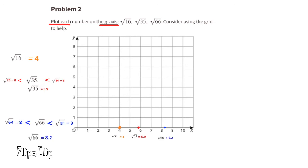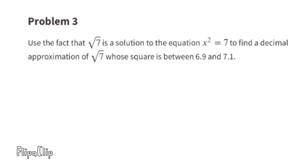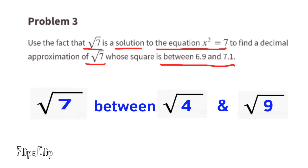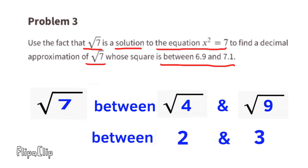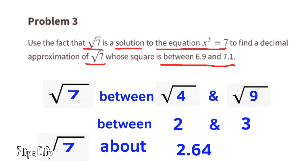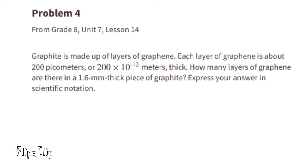Problem number 3: use the fact that the square root of 7 is a solution to x squared equals 7 to find a decimal approximation whose square is between 6.9 and 7.1. The square root of 7 is between the square root of 4 and the square root of 9 — that's between 2 and 3. It's closer to the square root of 9, so it's greater than 2.5. Testing on a calculator, 2.64 times 2.64 gets very close to 7, so the square root of 7 is approximately 2.64.